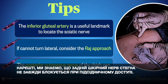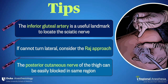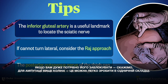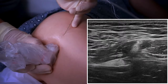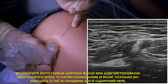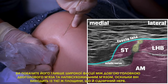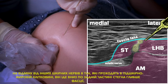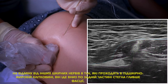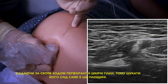Lastly, we know the posterior cutaneous nerve of the thigh is inconsistently blocked with the subgluteal approach. If you do need to get it, say for an above knee amputation, it can easily be blocked at the gluteal crease. You'll see it deep to the fascia lata between the long head of the biceps and the semitendinosus muscle as it emerges from the same plane as the sciatic nerve. In contrast to other cutaneous nerves in the body that run in the sub-Q fat, it runs down the posterior thigh deep to the fascia, giving off perforating skin branches as it goes, so look for it in that plane.